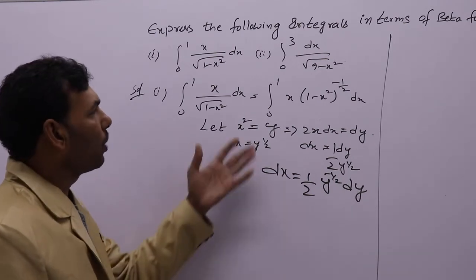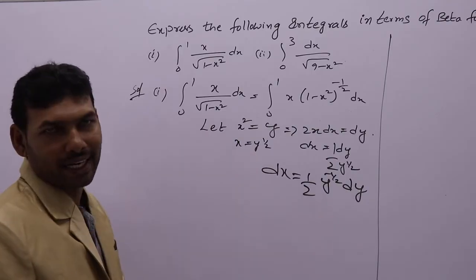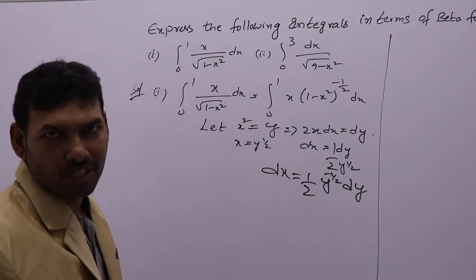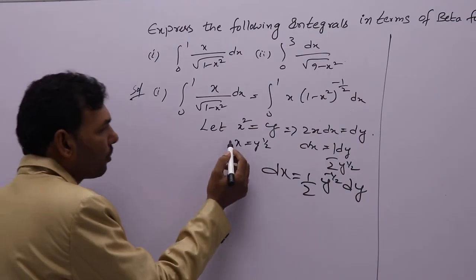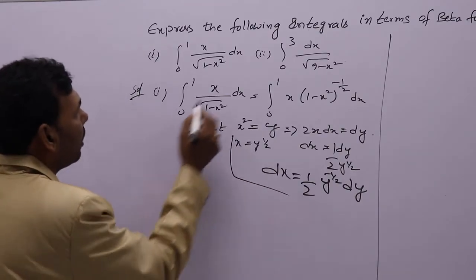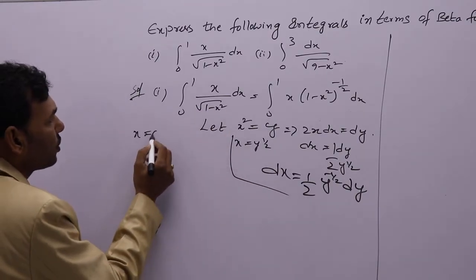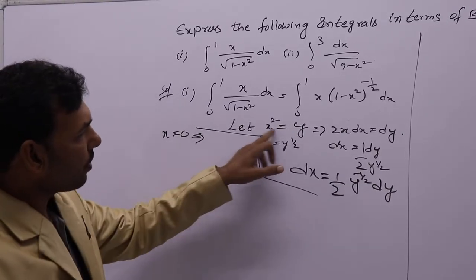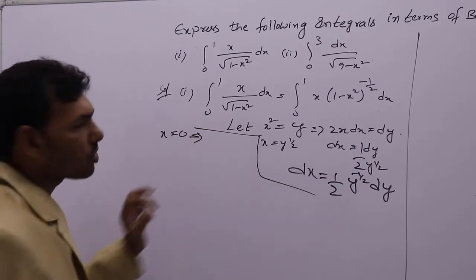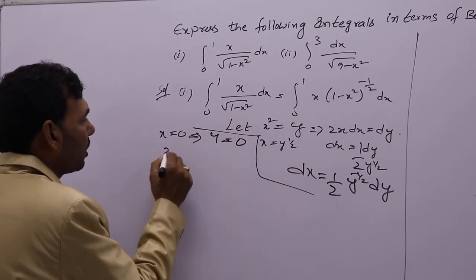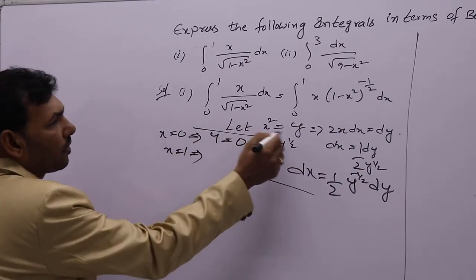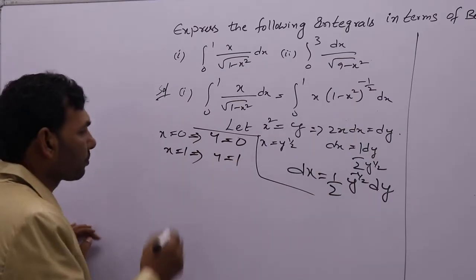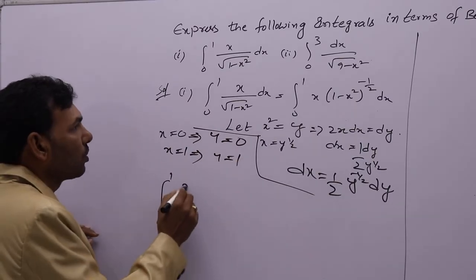Now we are going to substitute these values in this integral. Limits will be the same because to express in terms of beta, limits should be 0 to 1. You can check: put x equal to 0, y equal to 0 squared, which is 0. Put x equal to 1, y equal to 1. So the limits remain 0 to 1.